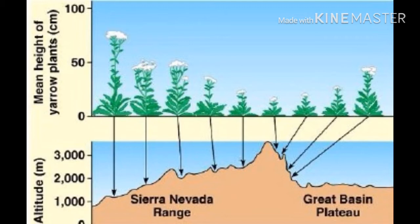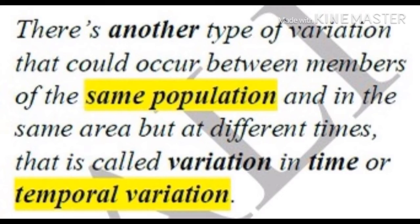Just like we mentioned before, the higher the altitude that we are present in, the shorter the plant is going to be. There's another type of variation that can occur between members of the same population and also in the same area. The previous example was the same population but different areas.